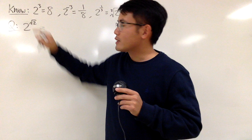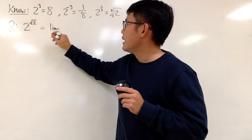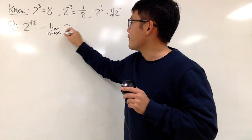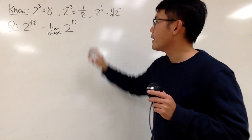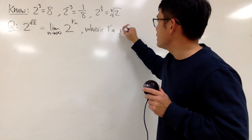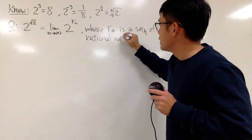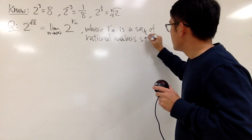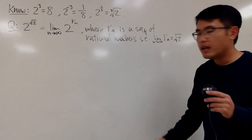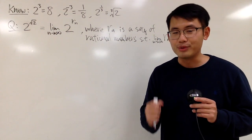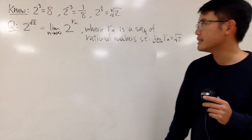This is how we are going to handle it. First of all, we know square root of 2 is about 1.4142 and so on. What we are going to do is we will define this as the limit as n goes to infinity of 2 raised to rn, where rn is a sequence of rational numbers such that the limit as n goes to infinity of rn gives you square root of 2. We are going to compute it and see what will happen.